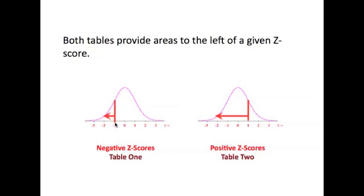That table will provide the area from the z-score back all the way to the left. And it does the same thing in the positive z-score tables. It provides the value from the z-score all the way back to the left. Table one, you look at if you have a negative z-score, which gives you this area. Table two, you look at if you have a positive z-score, which gives you this area.